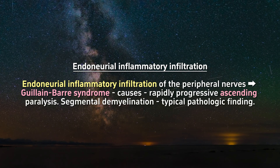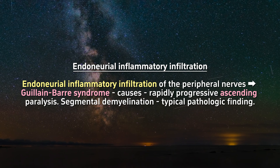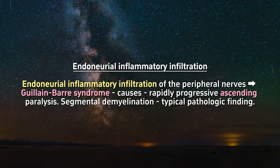Choice B: Endoneurial inflammatory infiltration of the peripheral nerves is characteristic of Guillain-Barré syndrome, which typically causes a rapidly progressive ascending paralysis rather than a slowly progressive paresthesia. Segmental demyelination is another typical pathologic finding.